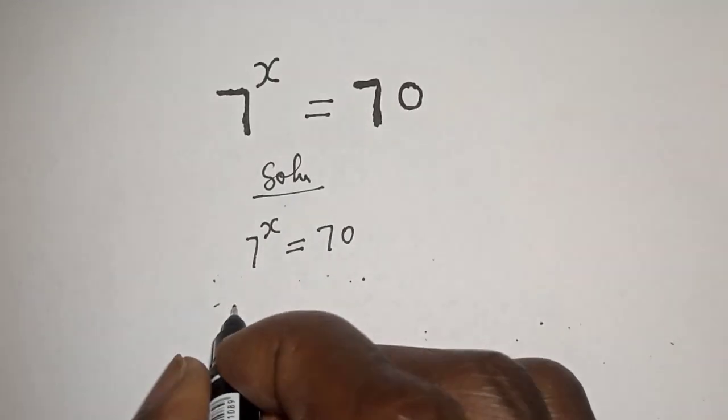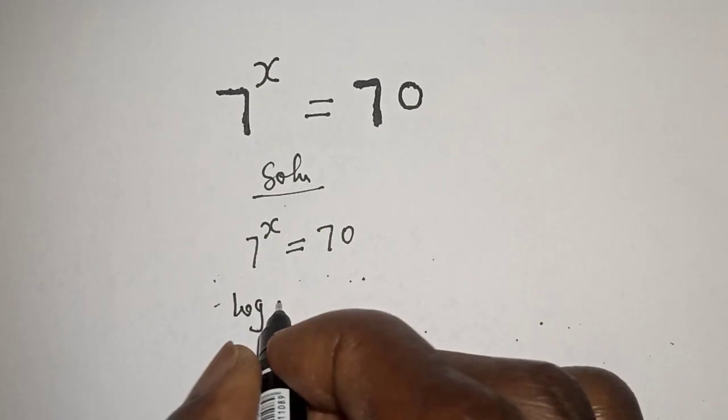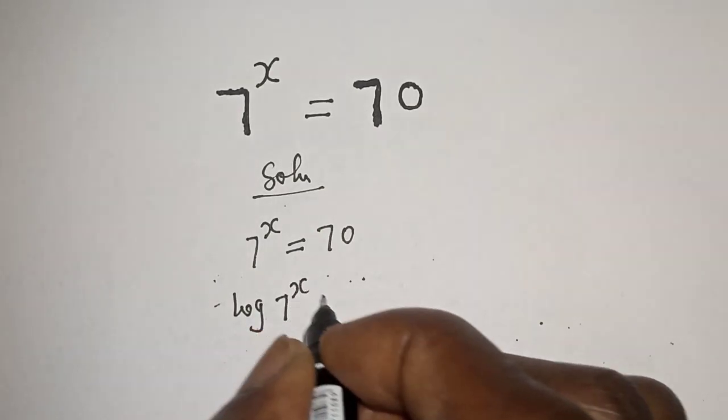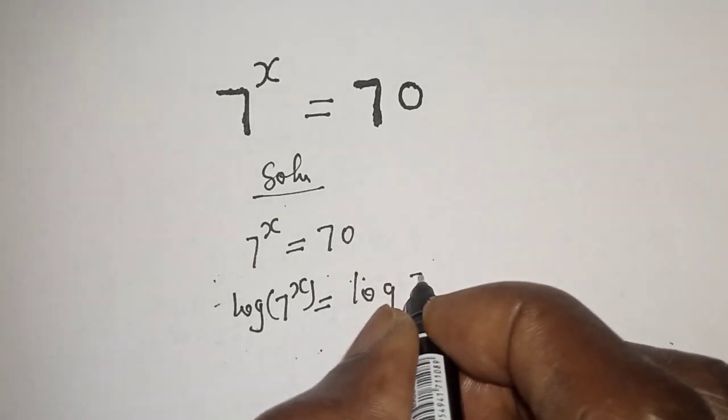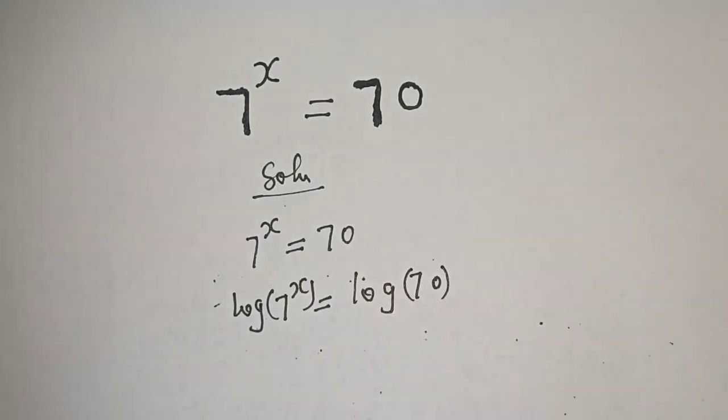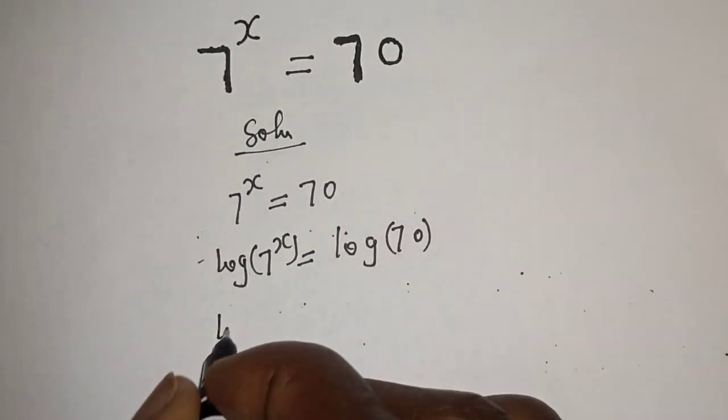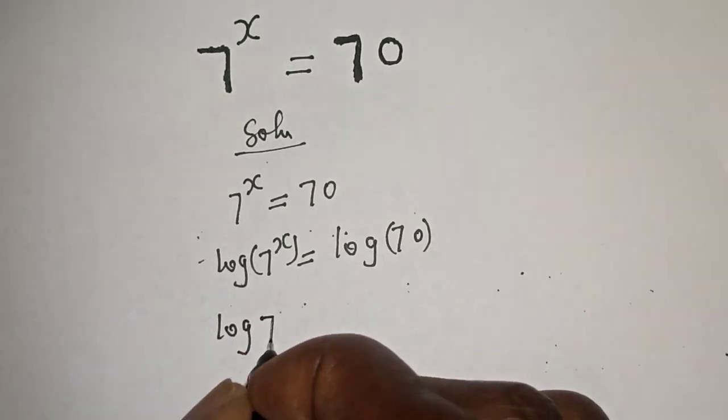Let's take the log of both sides. Log of seven raised to power x is equal to log 70.